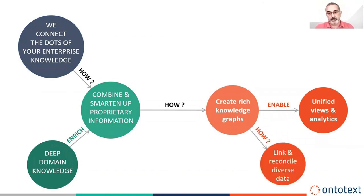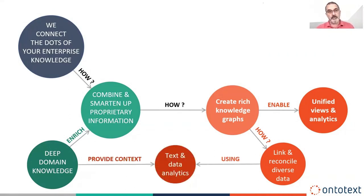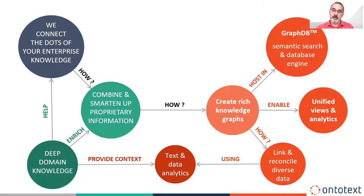The way in which we create these knowledge graphs is by linking data across different sources, reconciling data, converting strings to things — the usual steps — to end up with a body of knowledge that is easy to query, explore, and deal with. This requires a fair amount of text analysis, data analysis, and machine learning. Our special sauce, which we've been maturing for 20 years, is how we use almost exhaustive domain knowledge — big volumes of domain knowledge — to provide context and to help us better interpret, recognize, and classify things. That's how domain knowledge helps connect the dots of your enterprise knowledge.